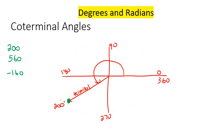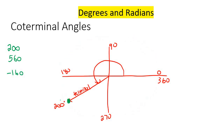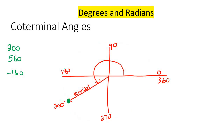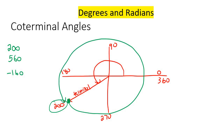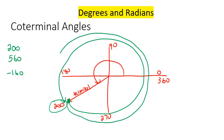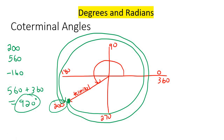I've only shown you when we go around once or backwards once, but you can do it as many times as you would like. So let's say you have 200, and then you go around once — that would be 560. You could go again, add another 360, and that would be 920. That is also a coterminal angle. You could go positive as many times, clockwise or anticlockwise, as long as each time you add 360.